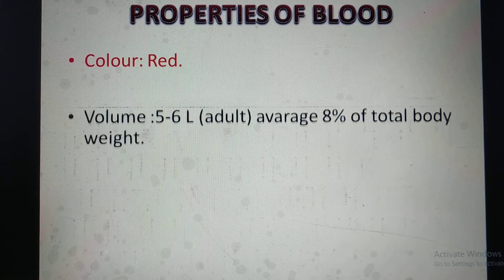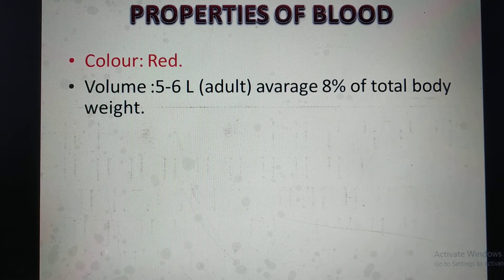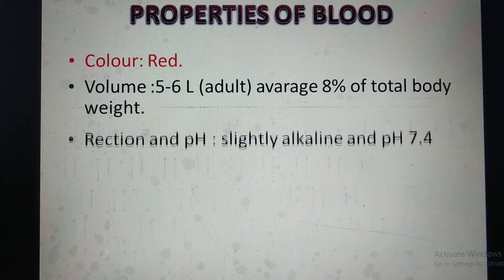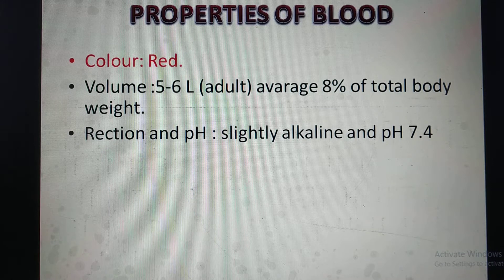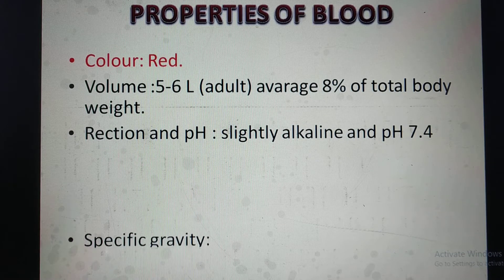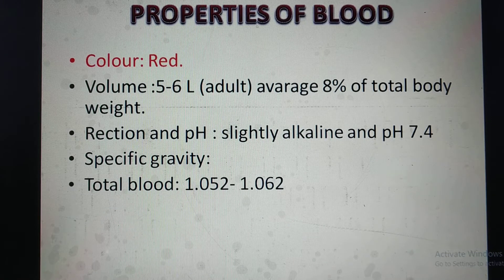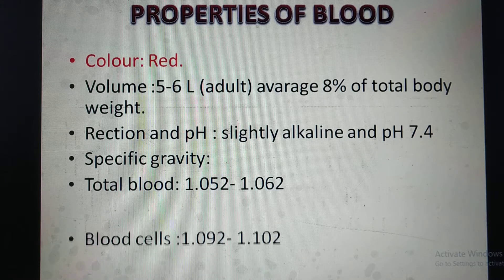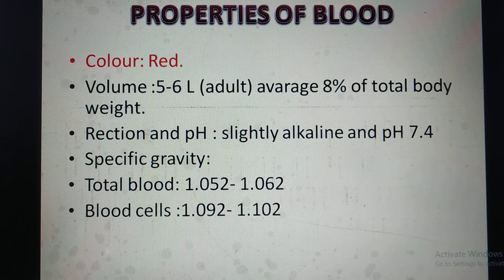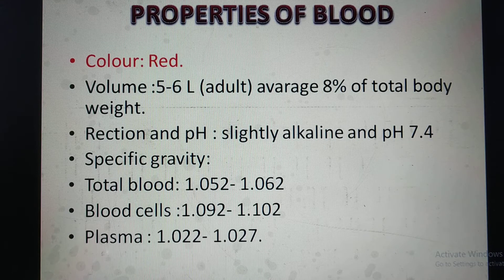Volume: 5 to 6 liters in an adult, averaging 8% of total body weight. Reaction and pH: slightly alkaline, pH 7.4. Specific gravity: total blood specific gravity 1.052 to 1.062; blood cells specific gravity 1.09 to 1.102; total plasma specific gravity 1.022 to 1.027.